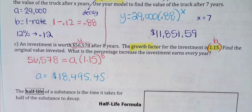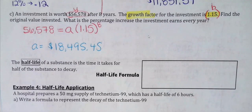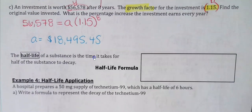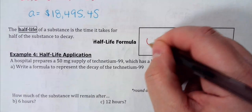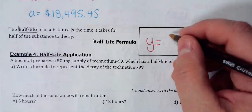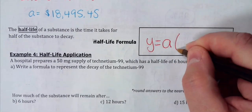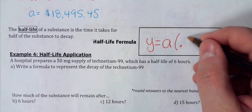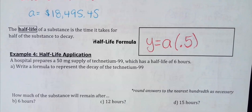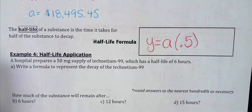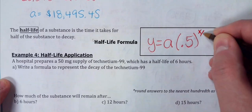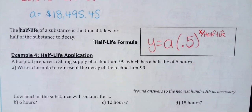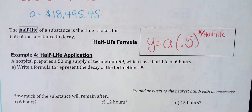At the bottom is half-life — a special case of exponential decay. Half-life is the time it takes for a substance to lose half its value. The formula is y equals a times 0.5 to the power of (x over h), where a is the initial amount, 0.5 is always the b value since you're cutting it in half, and h is the half-life of the substance. The exponent x over h determines how many half-lives have occurred.